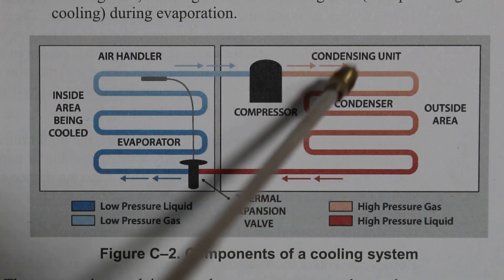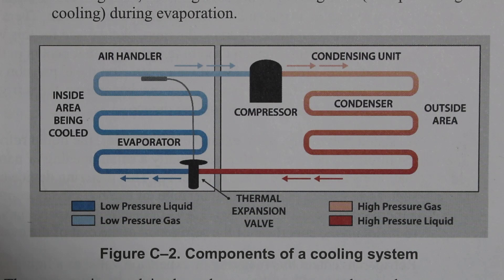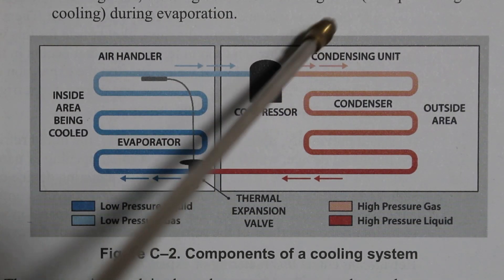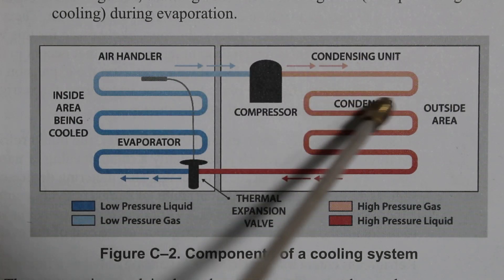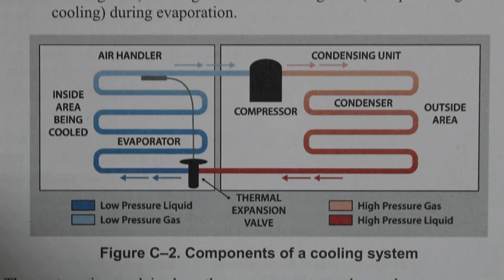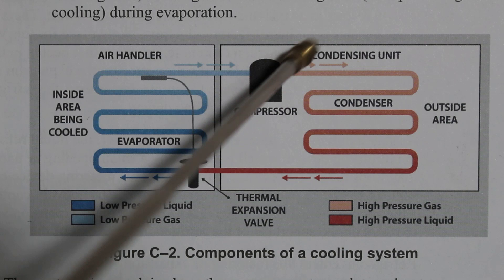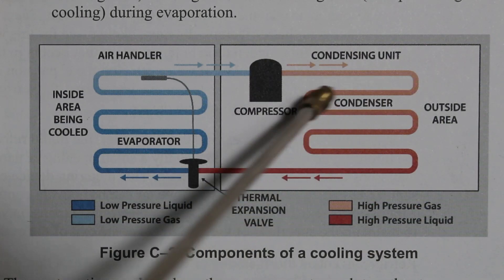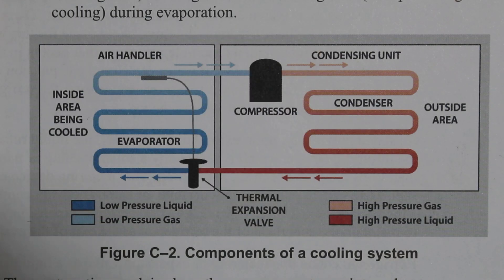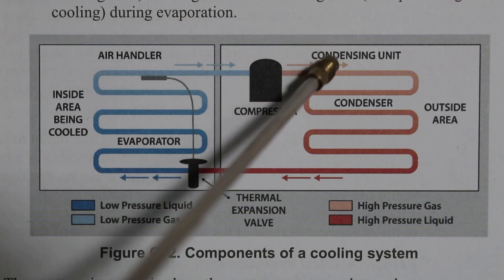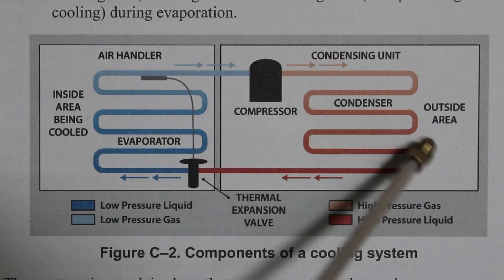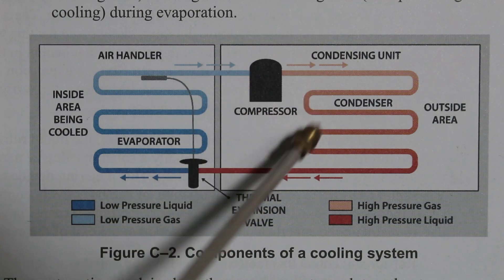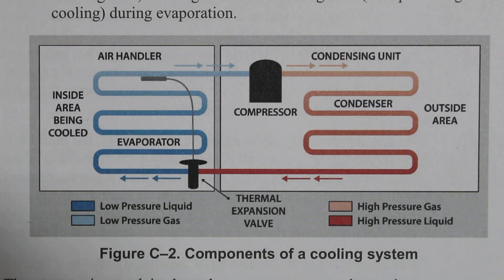We are entering our condenser as a high pressure gas — specifically a high temperature, high pressure, superheated vapor. At about the midpoint of our coil our refrigerant is saturated. At this point we have what is known as latent heat of condensation — latent heat being the change of state but not the change of temperature. We enter as a high pressure gas and leave as a high pressure liquid; specifically, we change state from a high temperature, high pressure, superheated vapor into a high temperature, high pressure, sub-cooled liquid. To learn more about superheat and sub-cooling, I will link a video in the description.